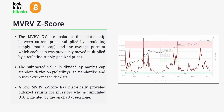To summarize: the MVRVZ score looks at the relationship between the current price multiplied by the circulating supply — which is the Bitcoin market cap — and the average price at which each coin was previously moved on the network, multiplied by the circulating supply, which is the realized cap. Once we subtract the realized cap from the market cap, we divide by the standard deviation of the Bitcoin price, which represents the volatility. This standardizes the data and removes extremes to the upside and the downside.